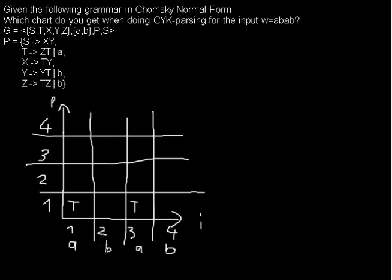At the second place we want to derive a B. What variables can be used to derive a B? We can use Y or Z. So we write both into that cell. We don't really know if the B was produced by Y or by Z, so we look at both possibilities. And we have a B at the fourth place as well, so we write down Y and Z there too.